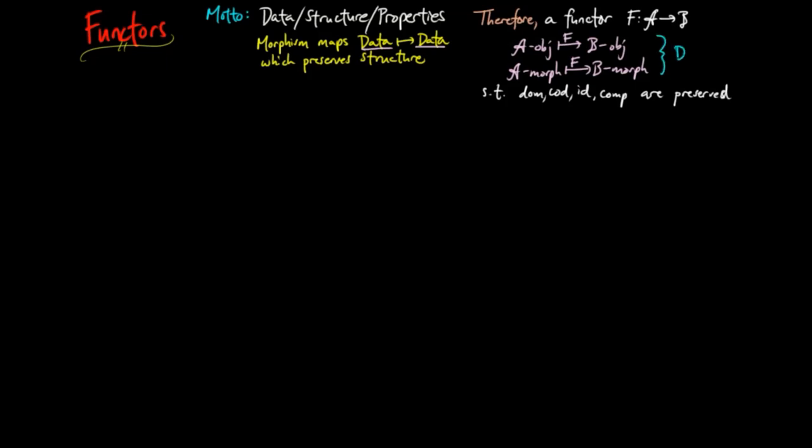The assignment of objects and morphisms is the mapping of data of a category, and the structure is the domain, codomain, identity, and composition. More formally, given categories A and B, a functor F from A to B consists of an assignment on objects, F sub 0,